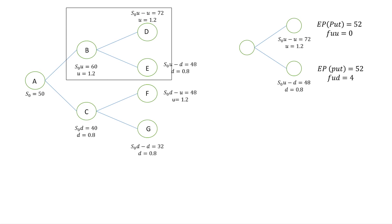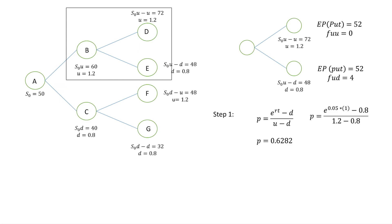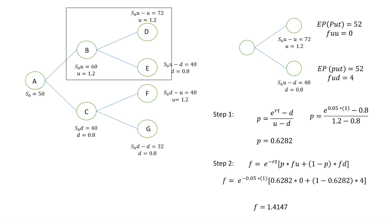Now we have all the data to solve node B using our two formulas. P = e^(RT) − D / (U − D), where U = 1.2, D = 0.8, R = 0.05, T = 1 year, giving P = 0.6282. Then F = e^(−RT) × [P × FU + (1 − P) × FD], where FU = 0 and FD = 4, giving F = 1.4147.